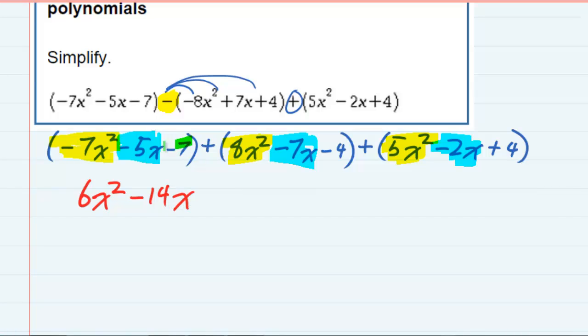And then we also have these constants that don't have any x's. So negative seven plus negative four would be a negative eleven plus four would put us back to negative seven. So negative seven is the constant term.